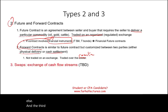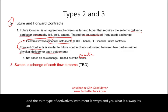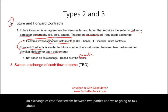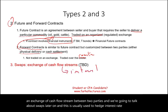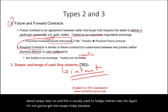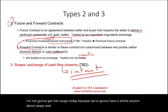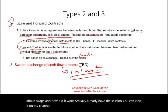The third type is swaps — an exchange of cash flow streams between two parties. Swaps are typically used to hedge interest rate risk. We'll have a full session dedicated to how swaps work.